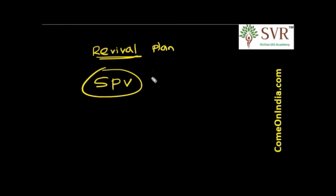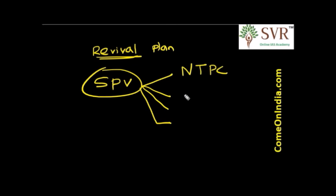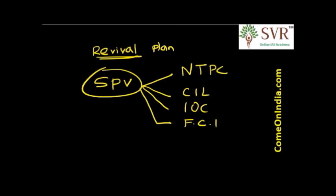A special purpose vehicle has been launched comprising four government companies: National Thermal Power Corporation, Coal India Ltd, Indian Oil Corporation, and Fertilizer Corporation of India. These four companies formed a special purpose vehicle to revive the three fertilizer units located in Gorakhpur, Sindri and Barauni.